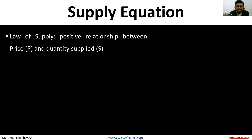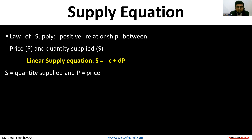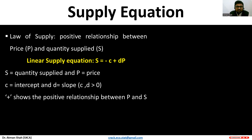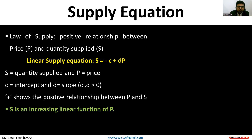The law of supply states that we have a positive association between price and quantity supplied. The linear supply equation is: S is equal to minus c plus d times p, where S is quantity supplied, p is price, c is the intercept, and d is the slope of the supply curve. This positive sign shows the positive association between price and quantity supplied, and supply is an increasing linear function of price.